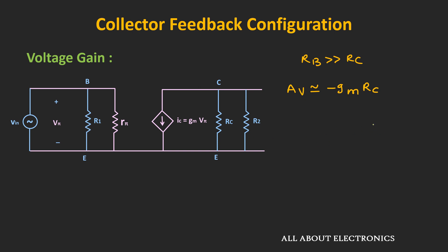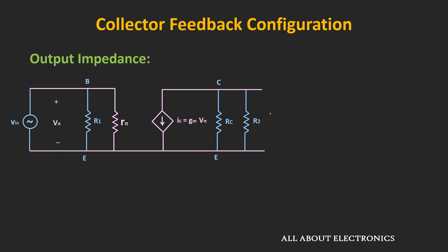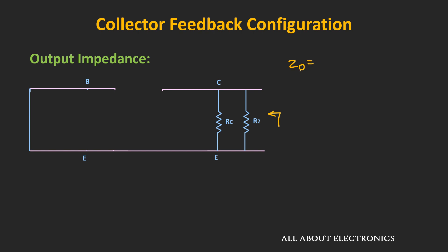This configuration also provides high voltage gain, similar to other common emitter configurations. Now let's find the output impedance, which is the Thevenin's equivalent impedance seen from the output side. While calculating this, all independent sources are set to zero, meaning Vin is short-circuited. This also short-circuits R1 and Rπ, making Vπ = 0, so the current source becomes open-circuited. In that condition, the output impedance is the parallel combination of RC and R2, or effectively RC ∥ RB.